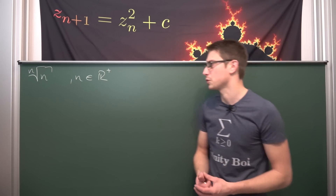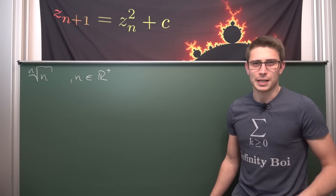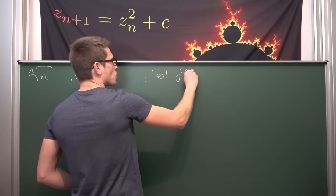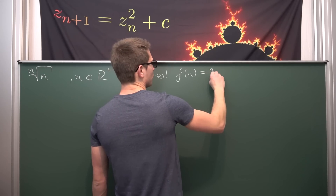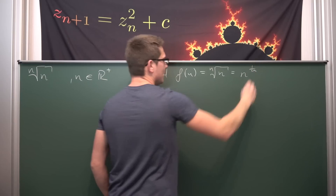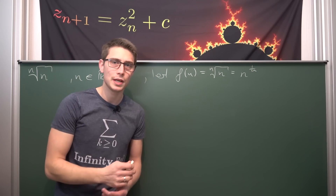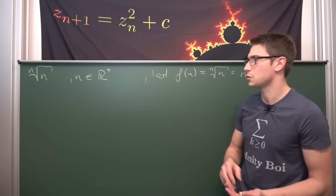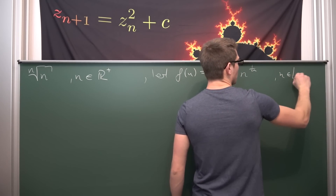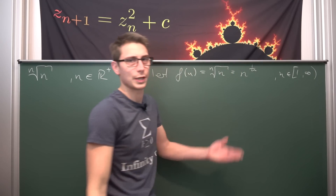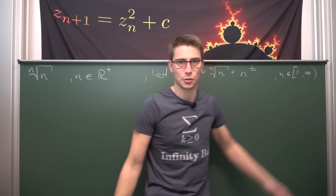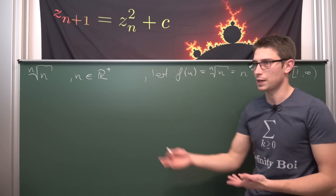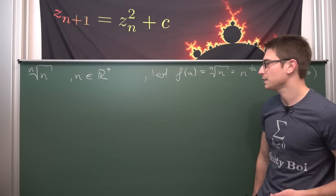I hope you enjoy the video. How can we find the maximum of a function? We need to define the function itself. Let f(n) be equal to the nth root of n, or in other words, n to the 1 over n power. We're going to restrict the domain to n being an element of the real numbers starting at 1, and we can go up to 10 since we know the maximum lies somewhere in between based on our earlier analysis.